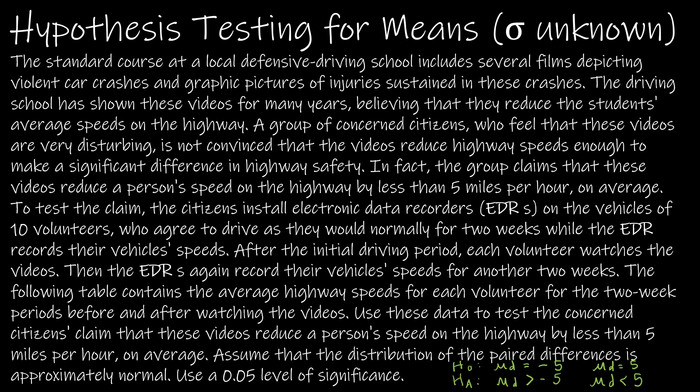We can't use positive five because remember, we're finding differences by taking the second speed minus the first speed. If the second speed is less than the first speed, we get a negative value — and that's what we want, because we want the numbers to decrease. If we used positive five, that would mean the second speed is greater than the first, implying they're actually increasing speed. So the videos would be counterproductive.